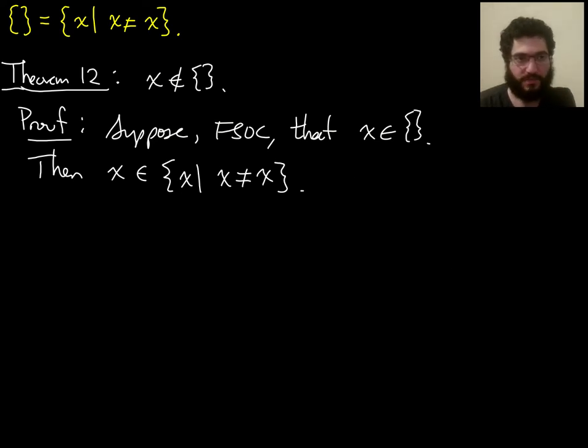So what justified going from this to this? What justified this deduction here? So on the one hand, definition 11 came in, and that allowed us to say the empty set is the same as this thing. But there's also an axiom, which powers the deduction from a proposition to the same proposition, but with something replaced by something equal to it. That is axiom 2.